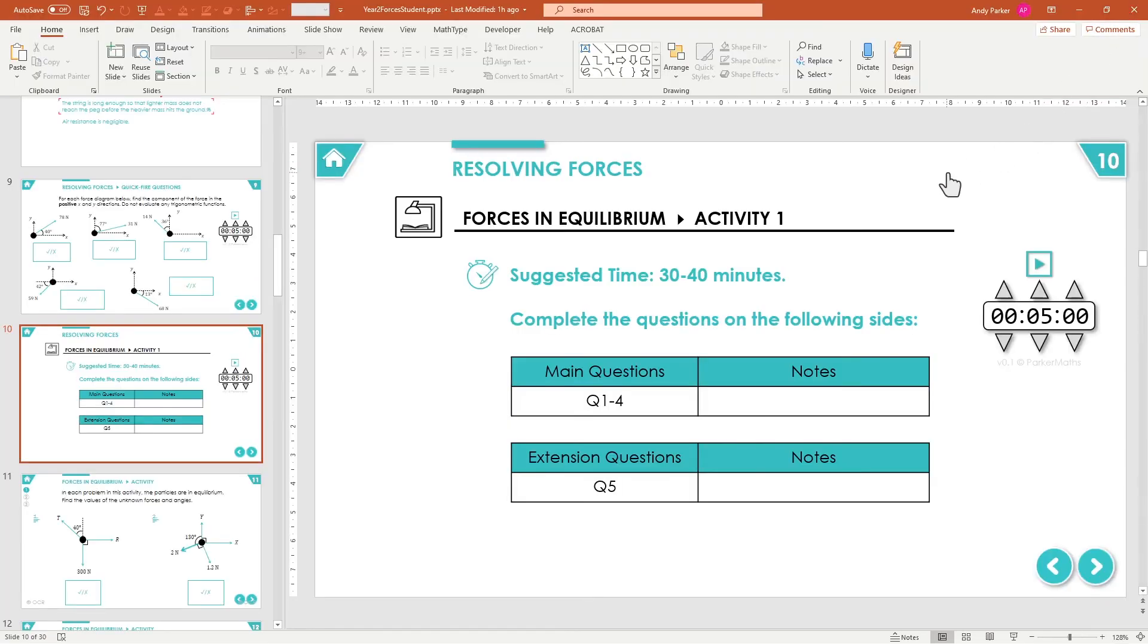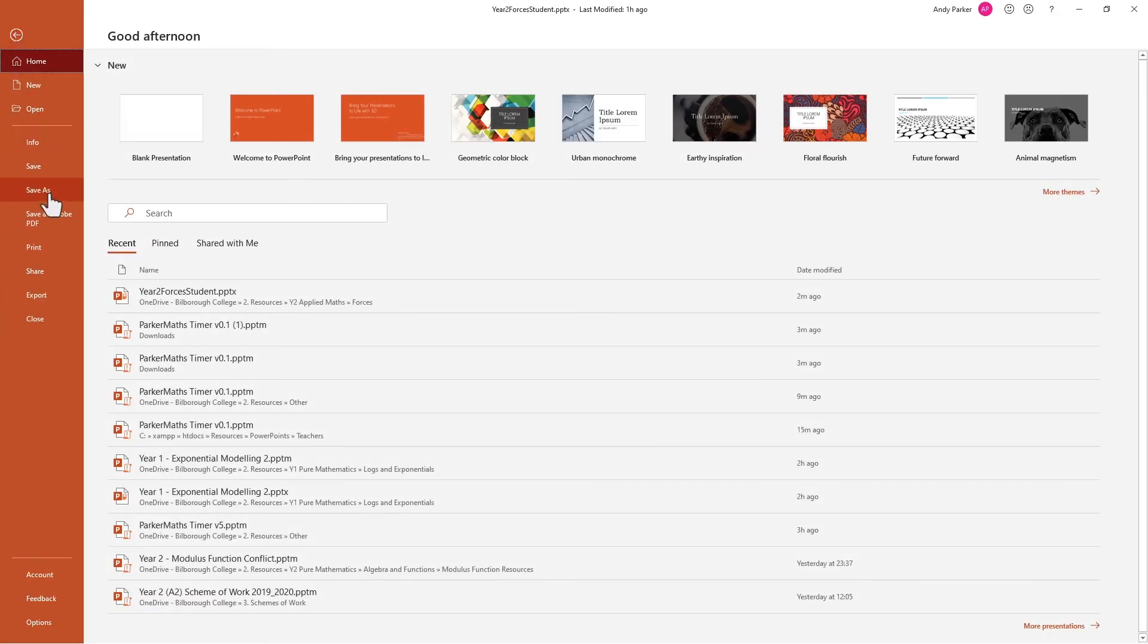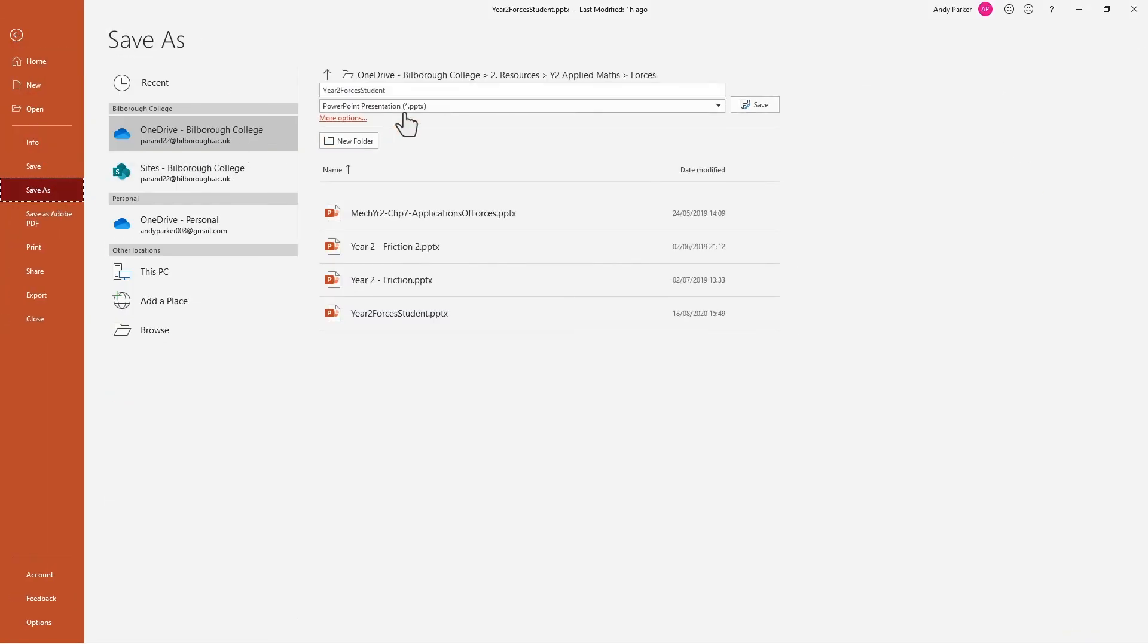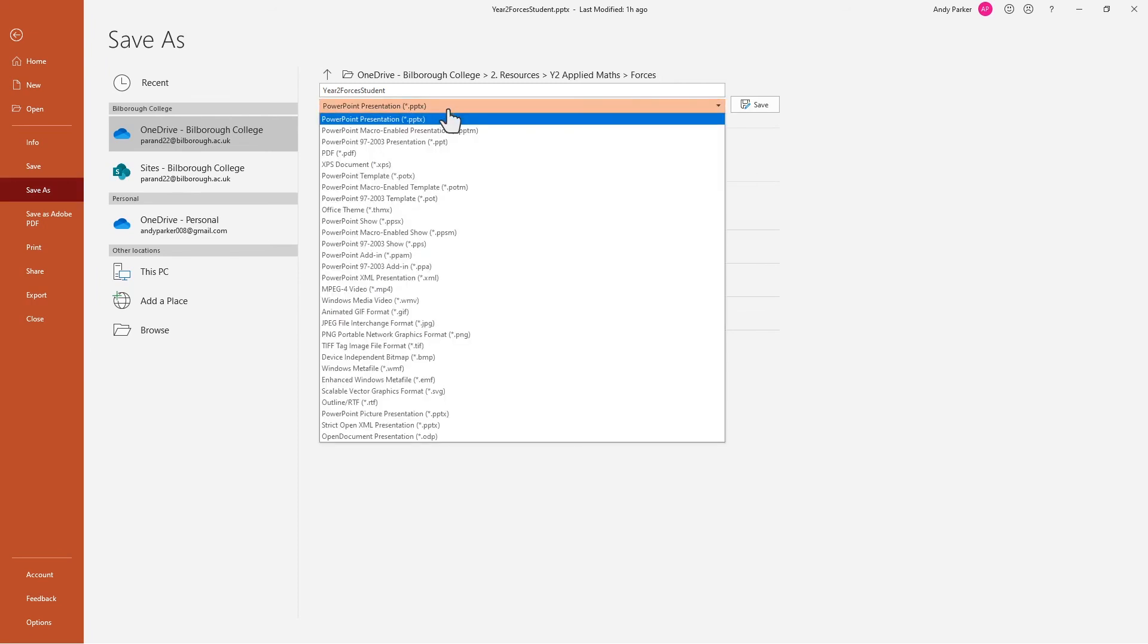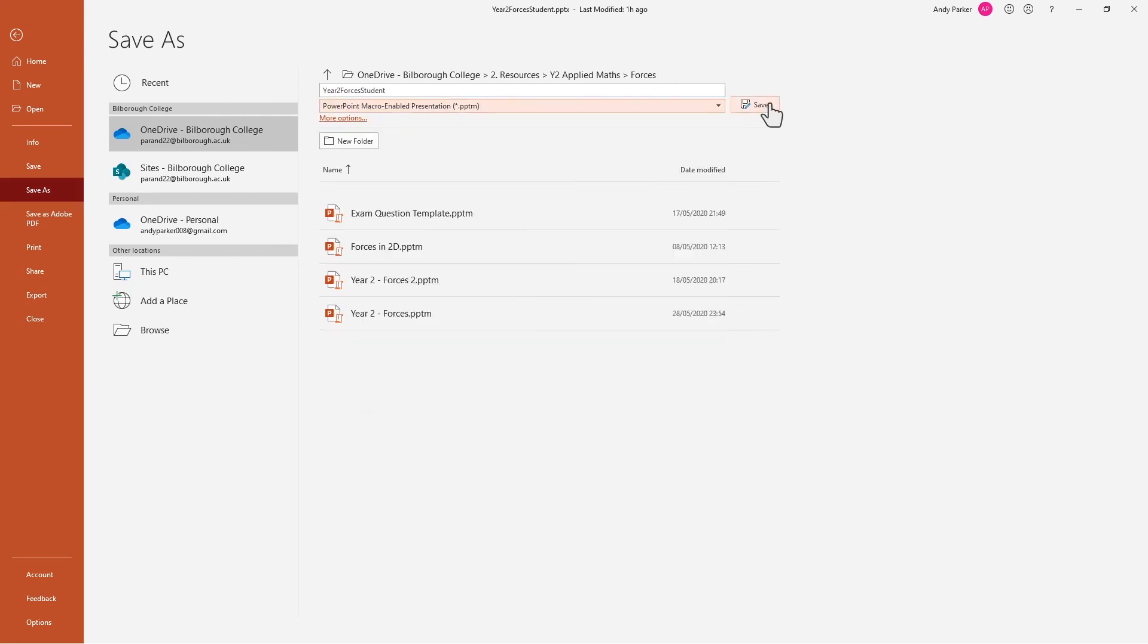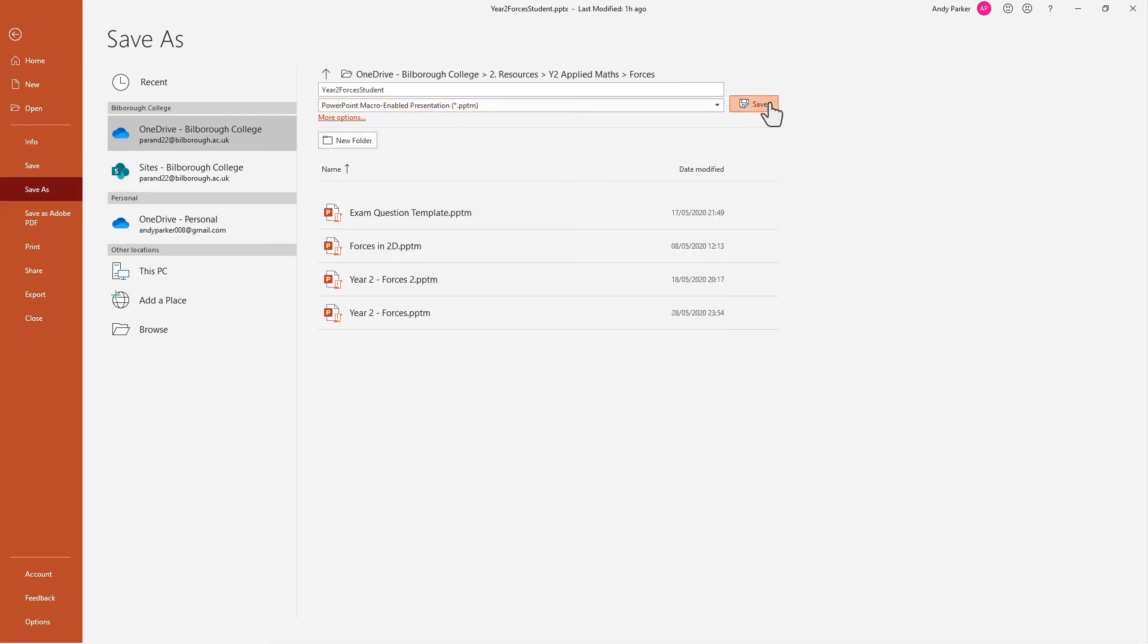Finally, as we're using a PowerPoint that's got macros in, you need to save it as a macro enabled PowerPoint. It's very simple to do, we just go file save as, and then we change it from PPTX to macro enabled presentation, and we're done.